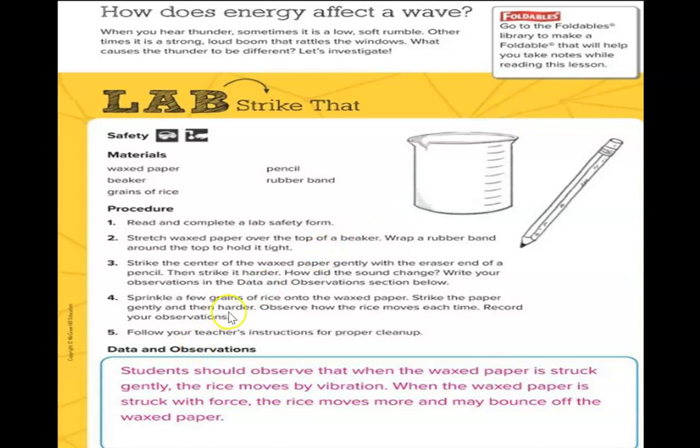After that, sprinkle a few grains of rice into the waxed paper. Then again, strike the paper gently, then harder and observe how the rice movement at each time and record your observation. So we're going to record our observation here in the box. So you should write that when the waxed paper is struck gently, the rice moves by vibration. When the waxed paper struck with force, the rice moves more and more bounce off the waxed paper.